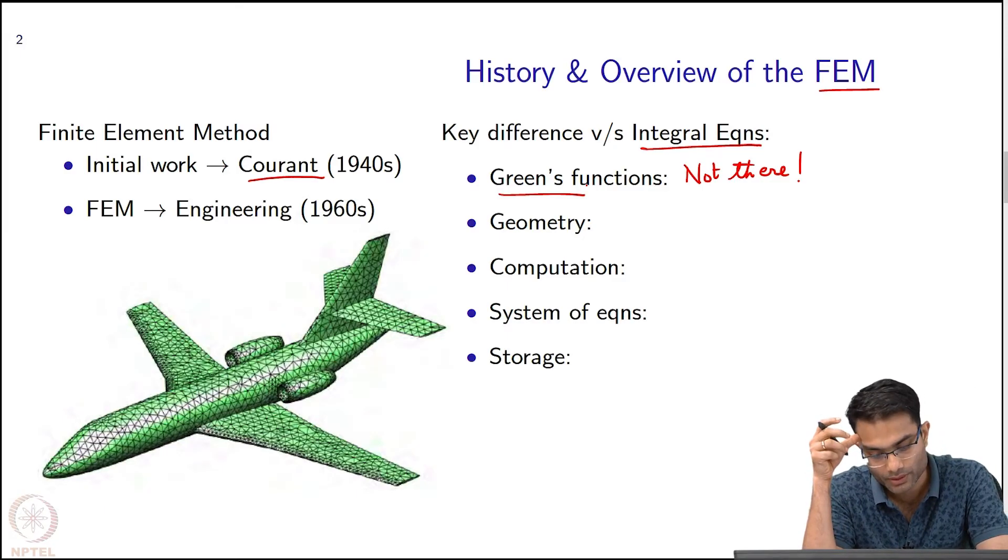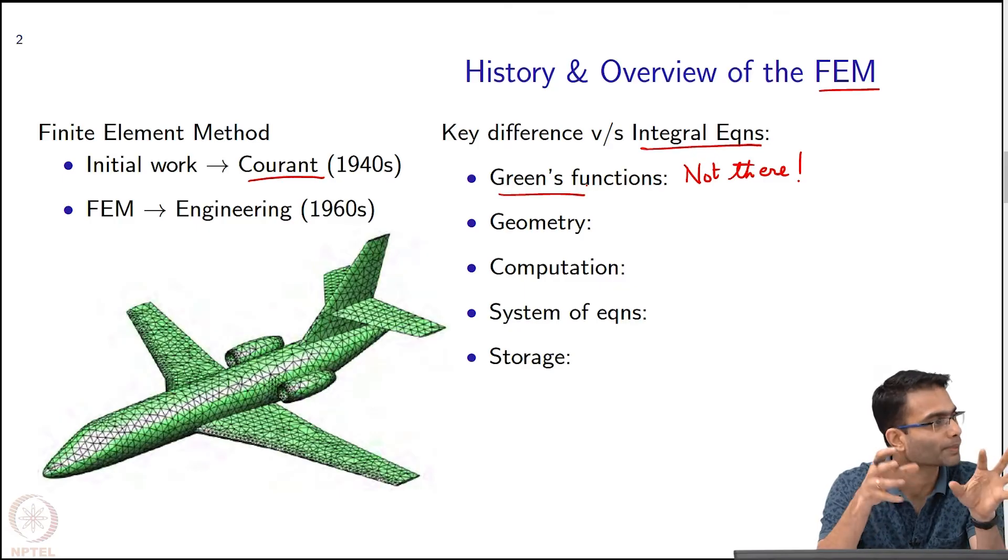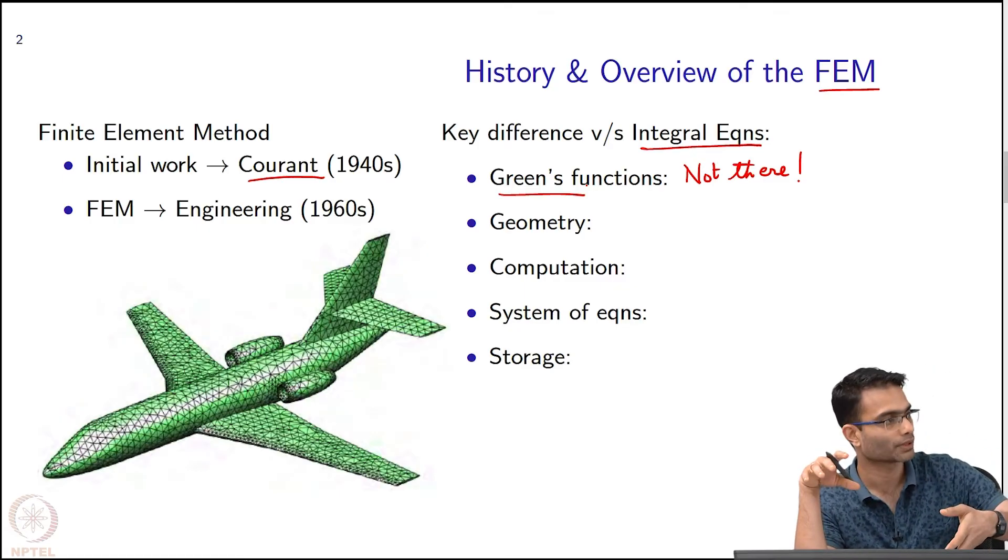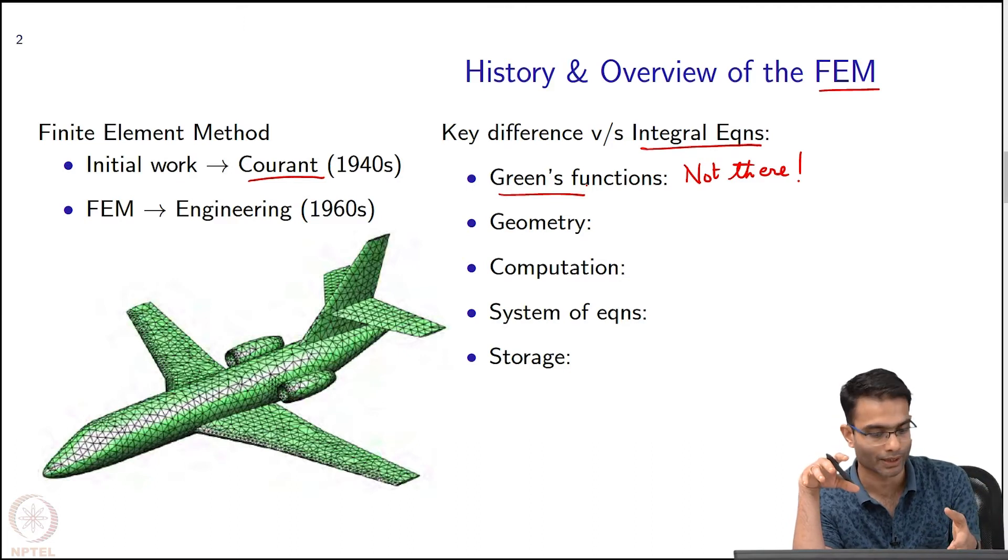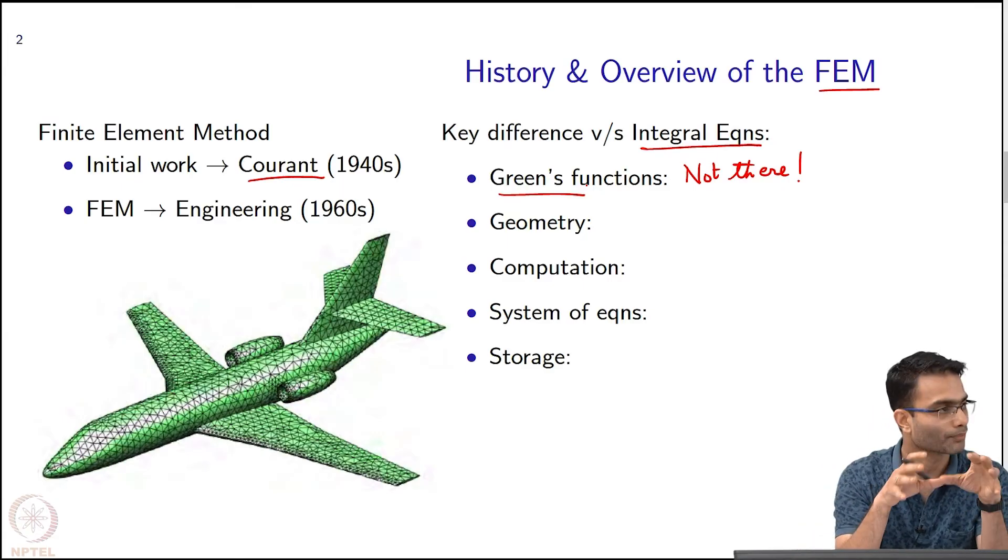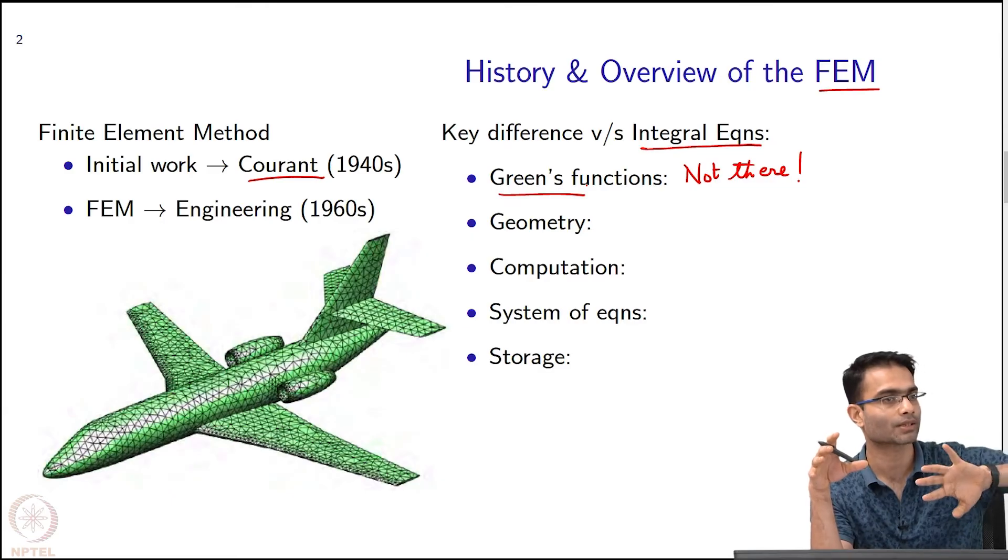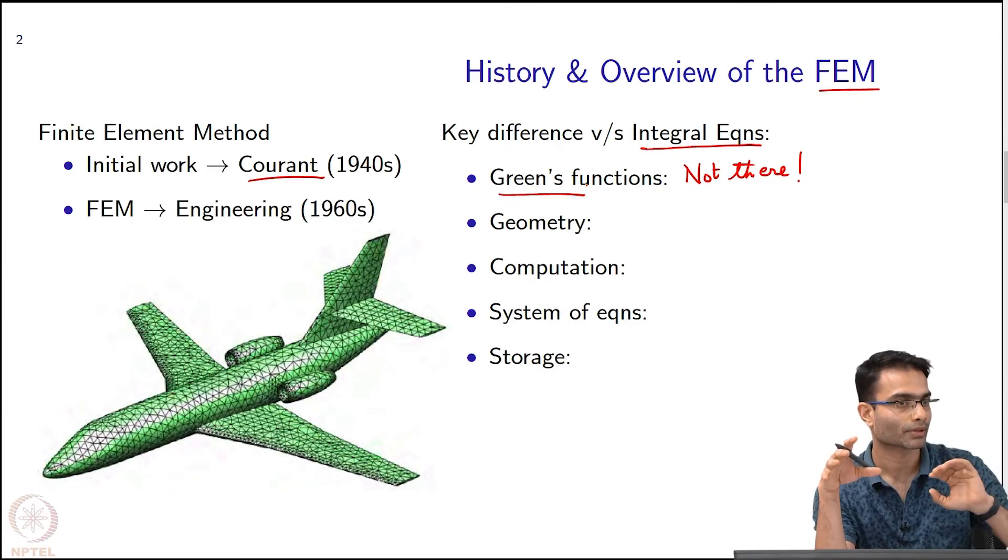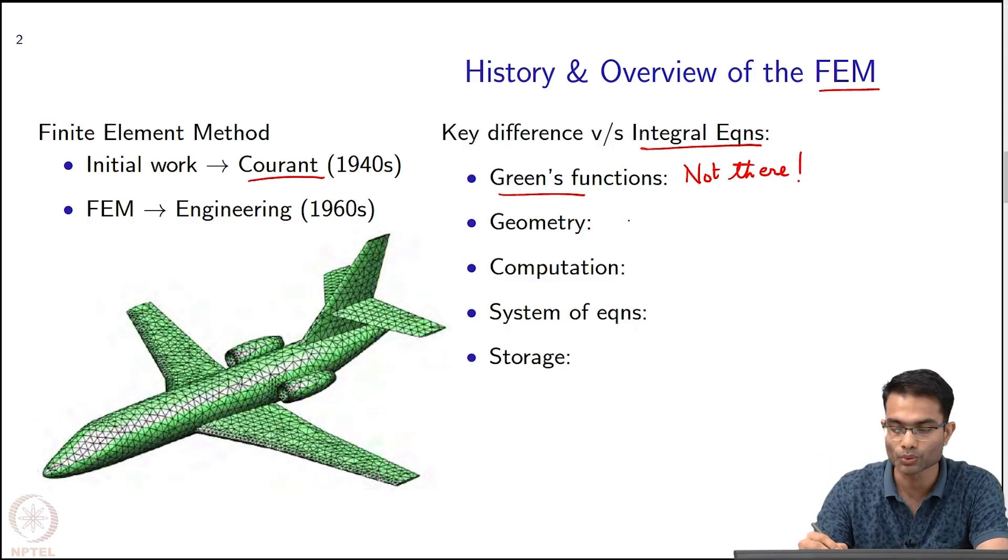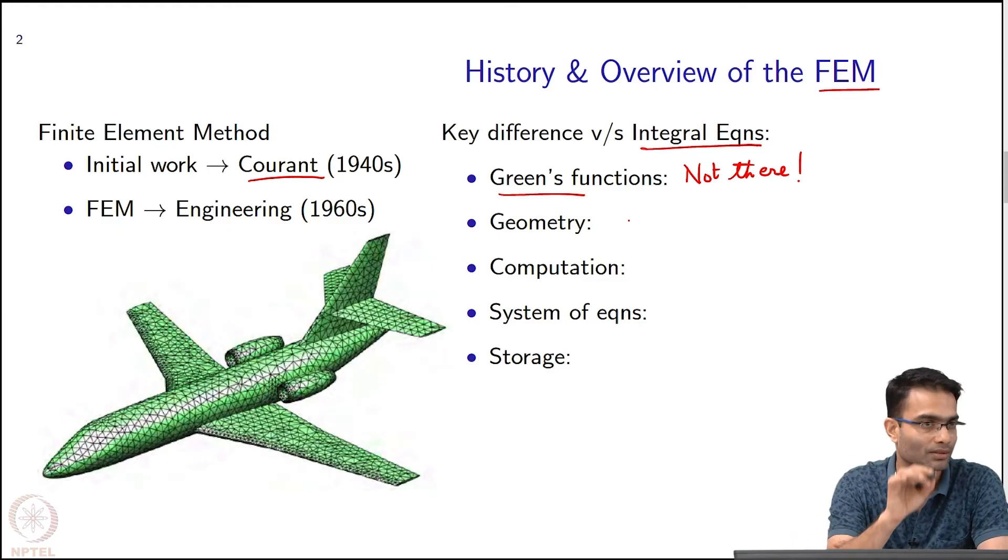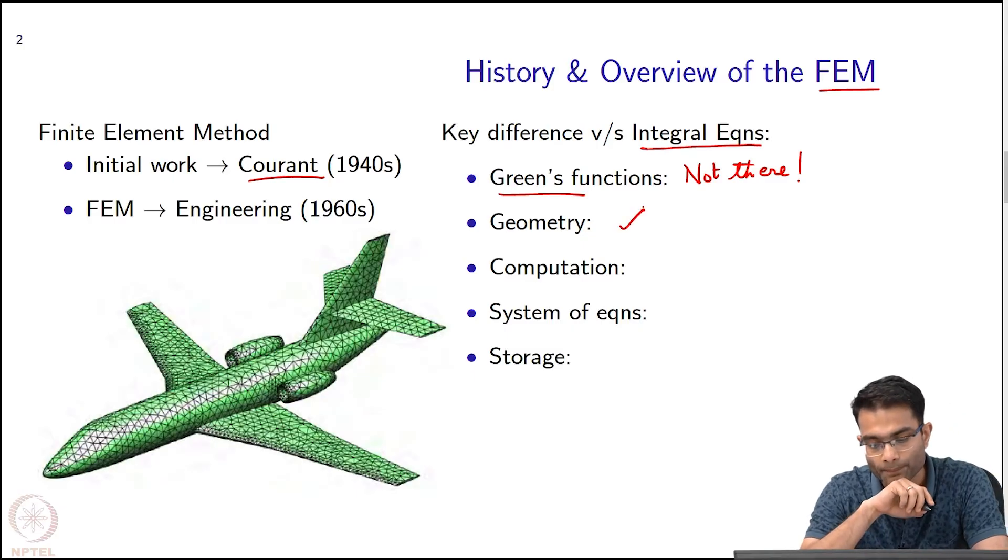Then geometry, this is one of the major plus points of FEM. It allows you to deal with very complex shaped objects. Like this aircraft that has been shown over here, these are actual simulations if you want to find out the radar cross section of an aircraft or something, this is how you would break up the domain. Here they have made these triangles all over the surface and these are conformal to the object. It takes the shape of the object. It allows you to use a standard CAD software to mesh whatever complex object you want and work with it. It gives you a lot of real life functionality.